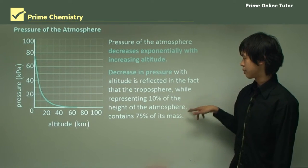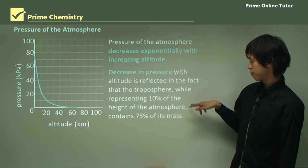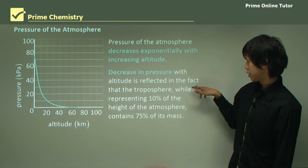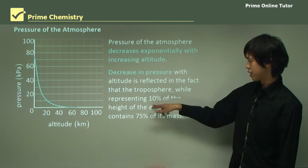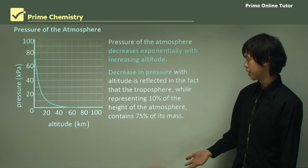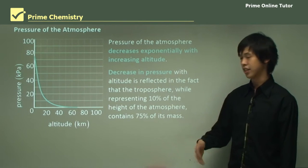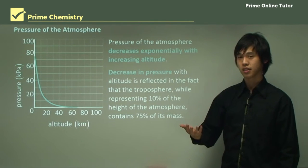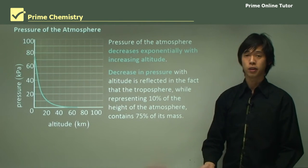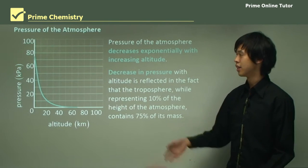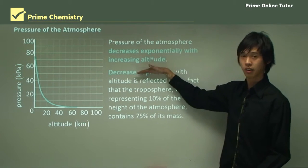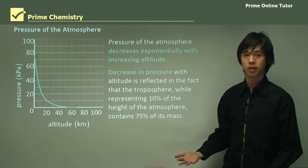The troposphere has the highest pressure because there is the most mass sitting on top pushing down. As we go up, only about 10 percent of the atmosphere is above us, and so the pressure must be less because there's less mass pushing down on our bodies.